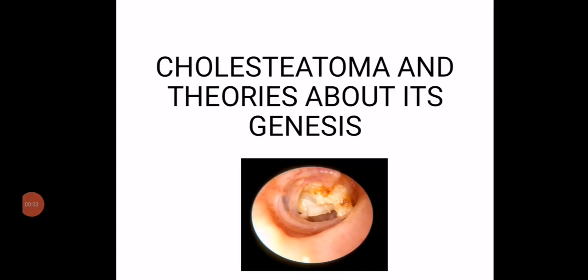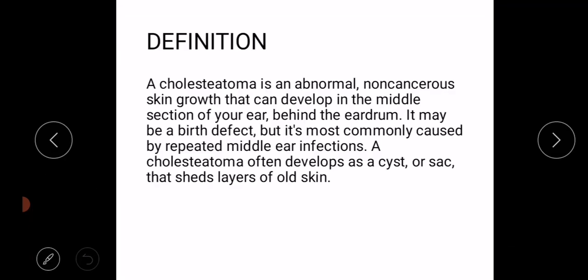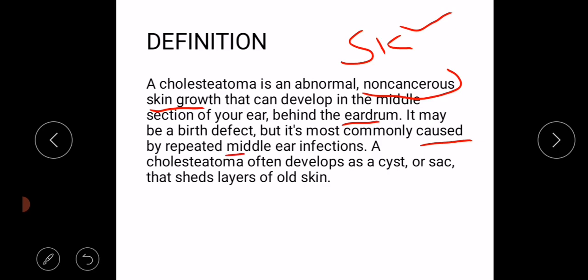Welcome to my channel. In this video we will discuss what is cholesteatoma and theories about its genesis. Cholesteatoma is an abnormal non-cancerous skin growth that develops in the middle section of the ear behind the eardrum. Normally the middle ear does not contain squamous keratinized epithelium, but in cholesteatoma this epithelium develops in the middle ear. It may be a birth defect, but it is most commonly caused by repeated middle ear infections.